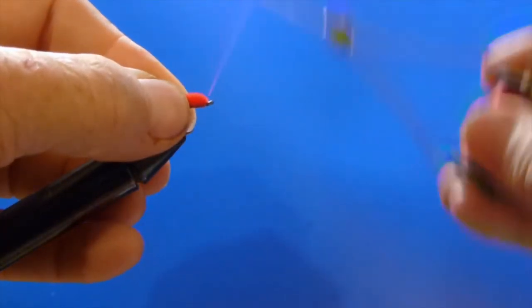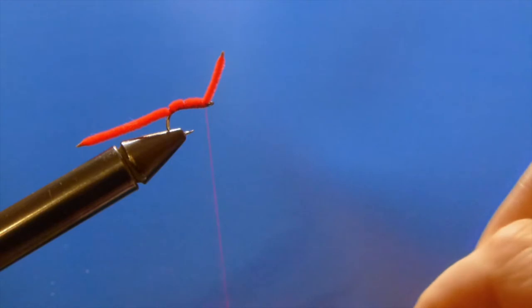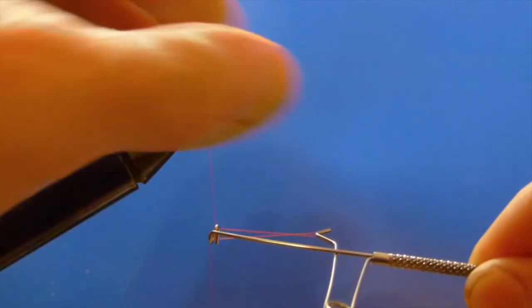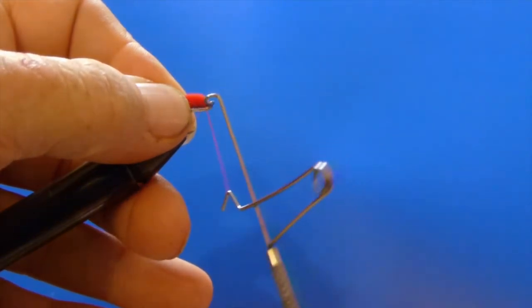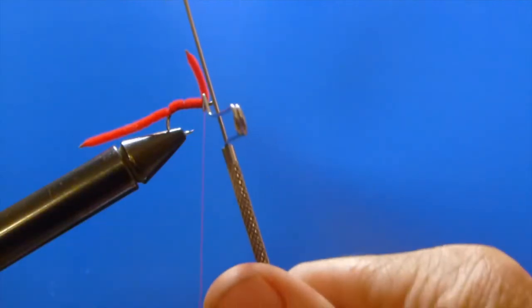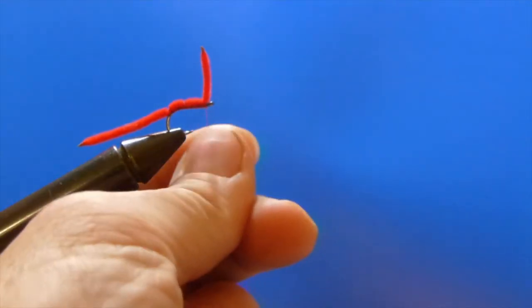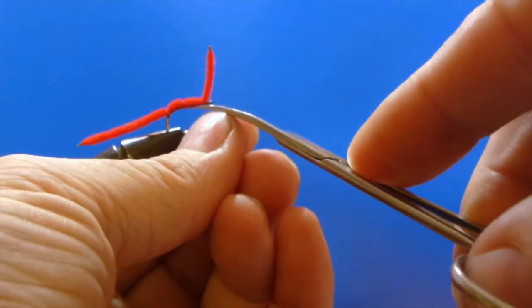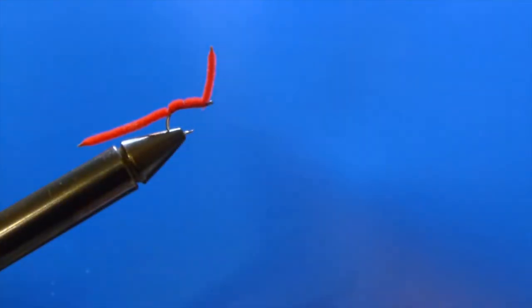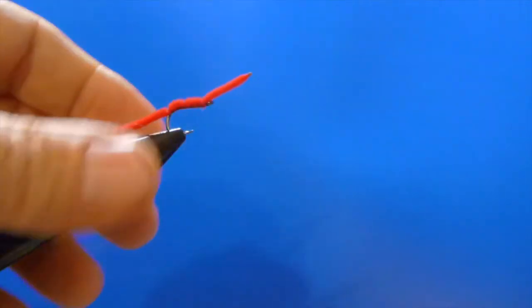So we're just going to pull it back, give it a few wraps up against the eye, and then we'll whip finish it off. Whip finish is just a knot to keep the thread from coming unraveled while we're fishing. We can trim our thread, and we have a complete San Juan worm.